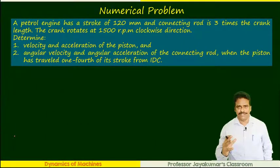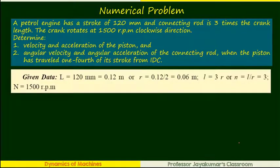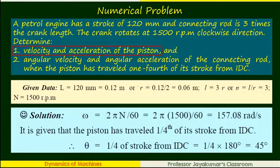Shall we solve a very basic numerical problem using those expressions? It's a straightforward numerical problem. What is the given data? The stroke length is given 120 mm. Connecting rod is three times the crank radius, so we can find n. We know that stroke equals two times crank radius, from that R can be found. What do we have to find? We have to find velocity and acceleration of piston, angular velocity and angular acceleration of the connecting rod.